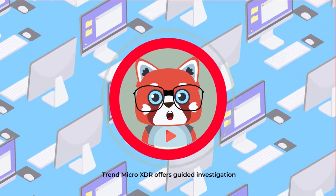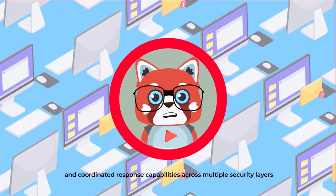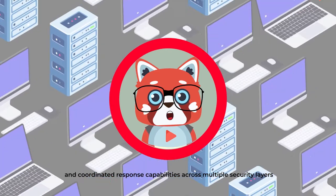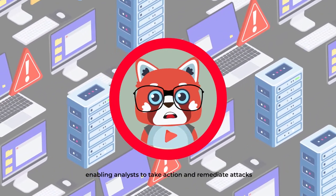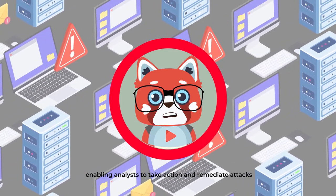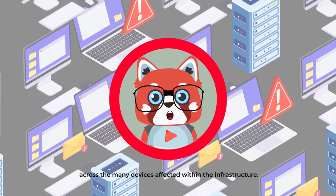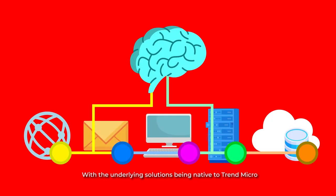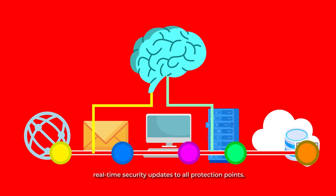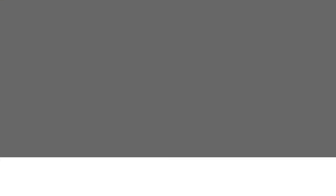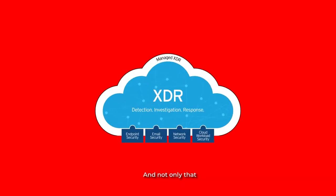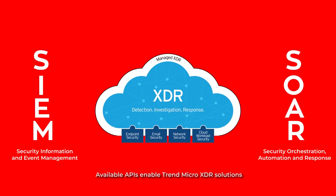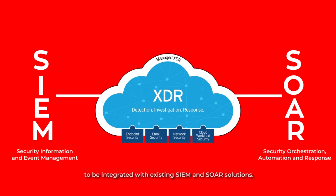Trend Micro XDR offers guided investigation and coordinated response capabilities across multiple security layers, enabling analysts to take action and remediate attacks across the many devices affected within the infrastructure. With the underlying solutions being native to Trend Micro, organizations can automatically enable real-time security updates to all protection points. Available APIs also enable Trend Micro XDR solutions to be integrated with existing SIEM and SOAR solutions.